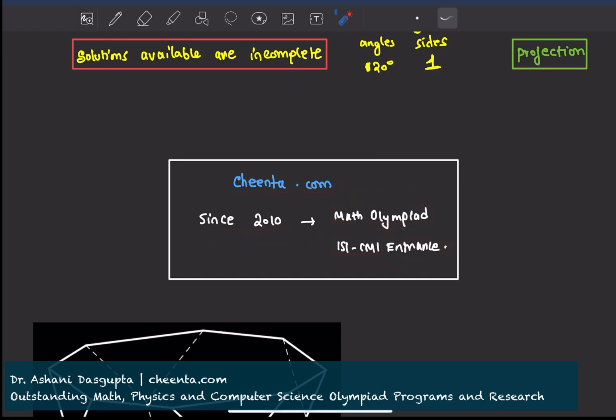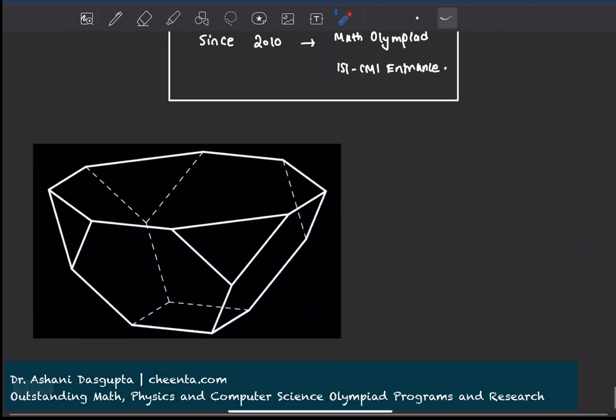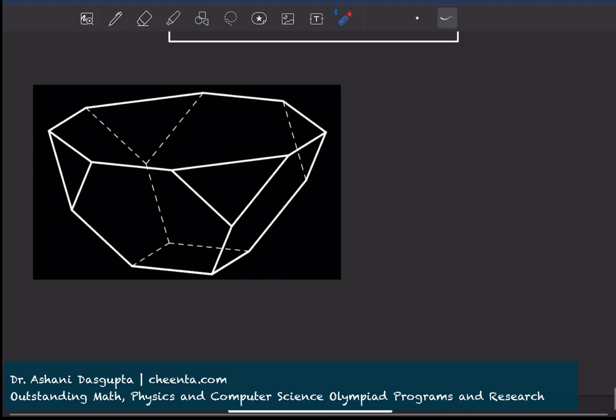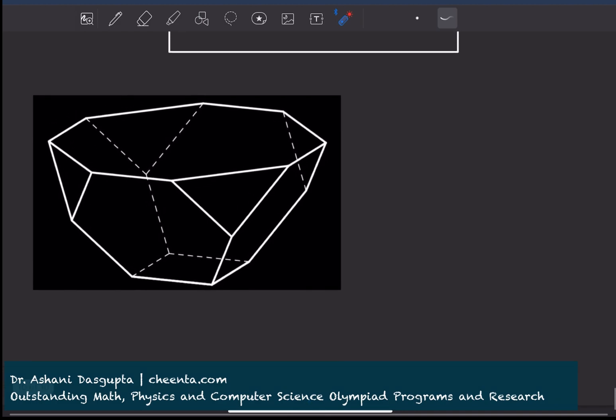Let's start solving the problem. It's a very beautiful one. The first thing that we should be realizing is about this bottom quadrilateral. My claim is that it is a square.